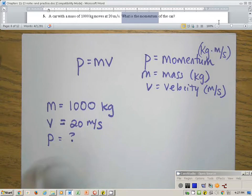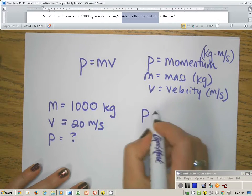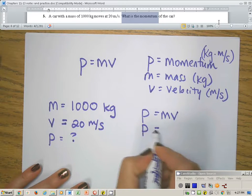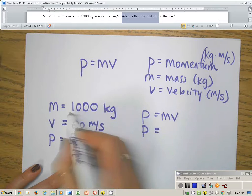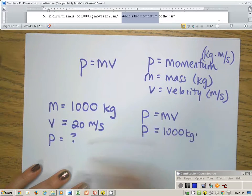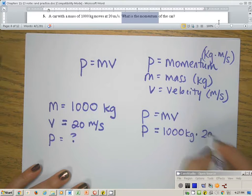Well, if I know these things, then I can simply plug this in. I can substitute it into my equation. p I don't know, so I'm going to write p down again. My m is 1,000 kilograms, and my v is 20 meters per second.